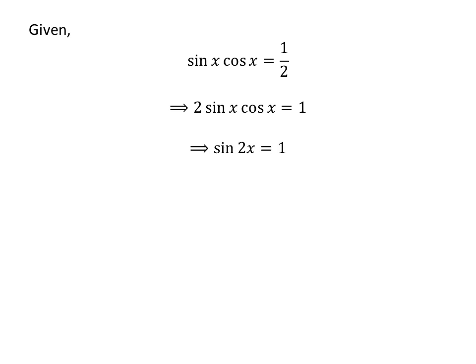We know the trigonometry identity: sine of 2x is equal to 2 times sine of x times cosine of x. The proof of this trigonometry identity has been explained in the video appearing in the upper right corner. The link is also given in the description section.